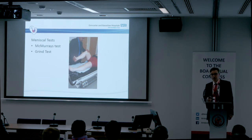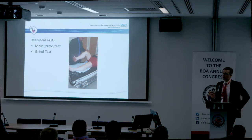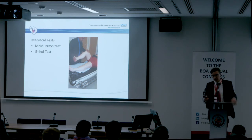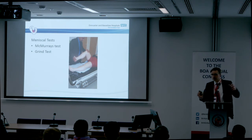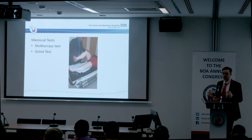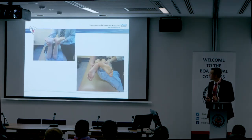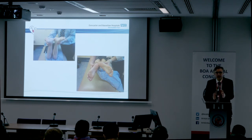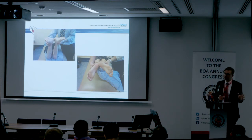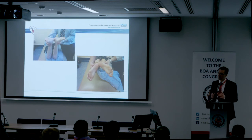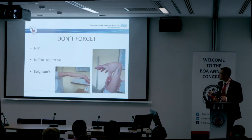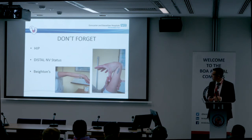Meniscal tests: McMurray's test is 50% sensitive, so it's right about half the time. But you should know it and know one way of doing it — everyone has their own way. Do it one way and stick to it. Basically, all you're doing is compressing the meniscus in flexion and extension while varying rotation. I flex it, I rotate, and I extend. You're listening for a click rather than pain, and look at the patient. The dial test: if this is an instability or ligament injury case, put the patient prone and do the dial test with both legs together at 30 degrees and 90 degrees. At 30 degrees, if it's an isolated posterolateral corner injury it'll be positive; at 90 degrees, it indicates PCL and posterolateral corner involvement. Don't forget the hip, don't forget distal neurovascular status, and you should know Beighton score.